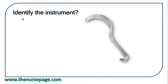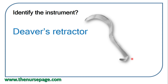Next question: identify the instrument. This is a retractor used in abdominal and obstetric surgeries. The name is the Doyen's retractor, used in abdominal and obstetric surgeries.